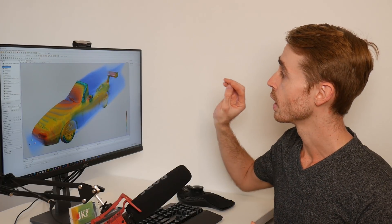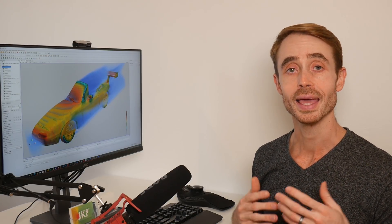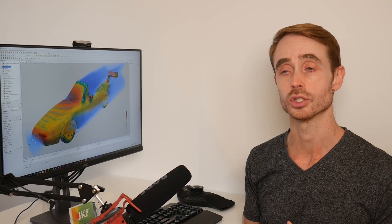A common question I get asked, particularly by my clients, is whether or not a rear wing will still be effective on their convertible race car even without a roof on. And today in this video, we're going to attempt to investigate and answer this question with the help of a little bit of CFD.